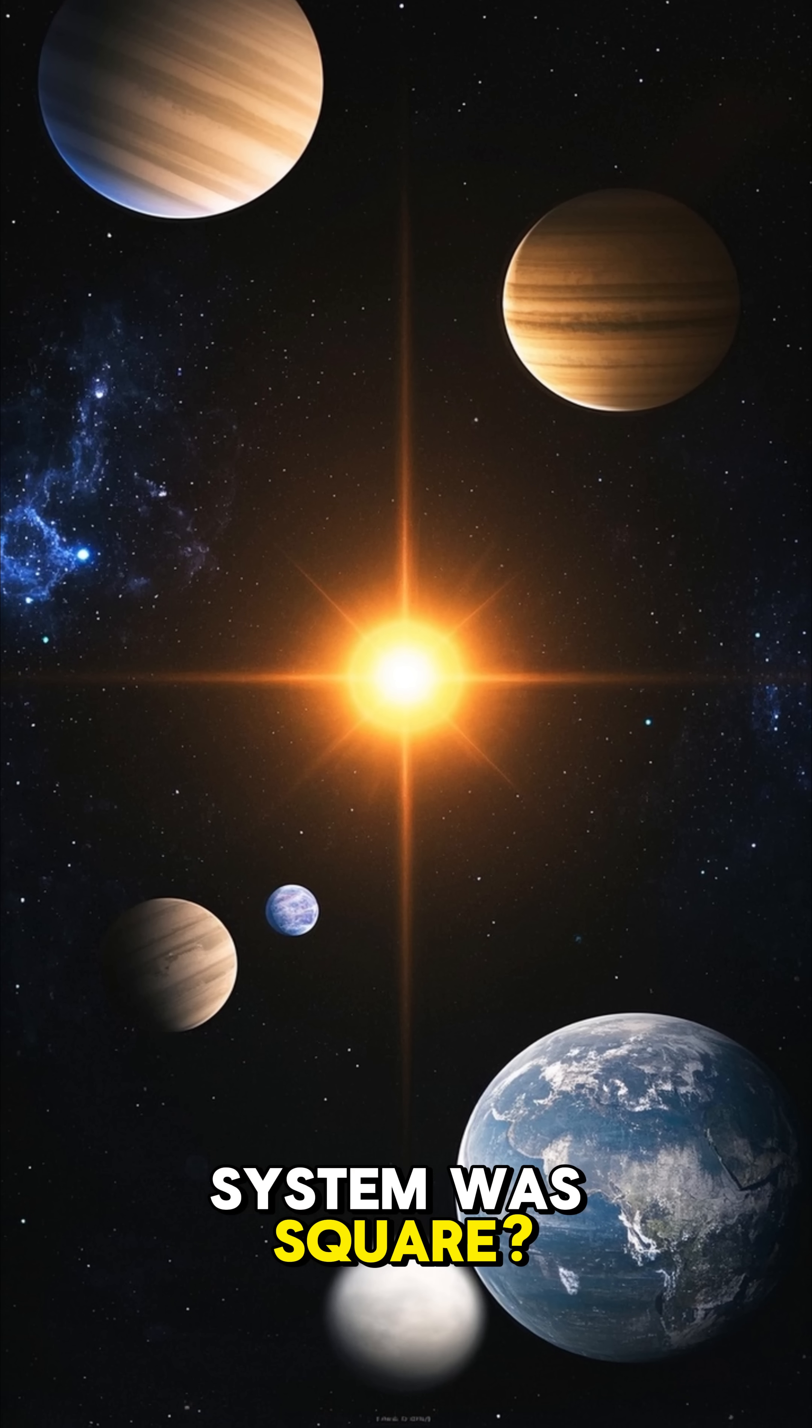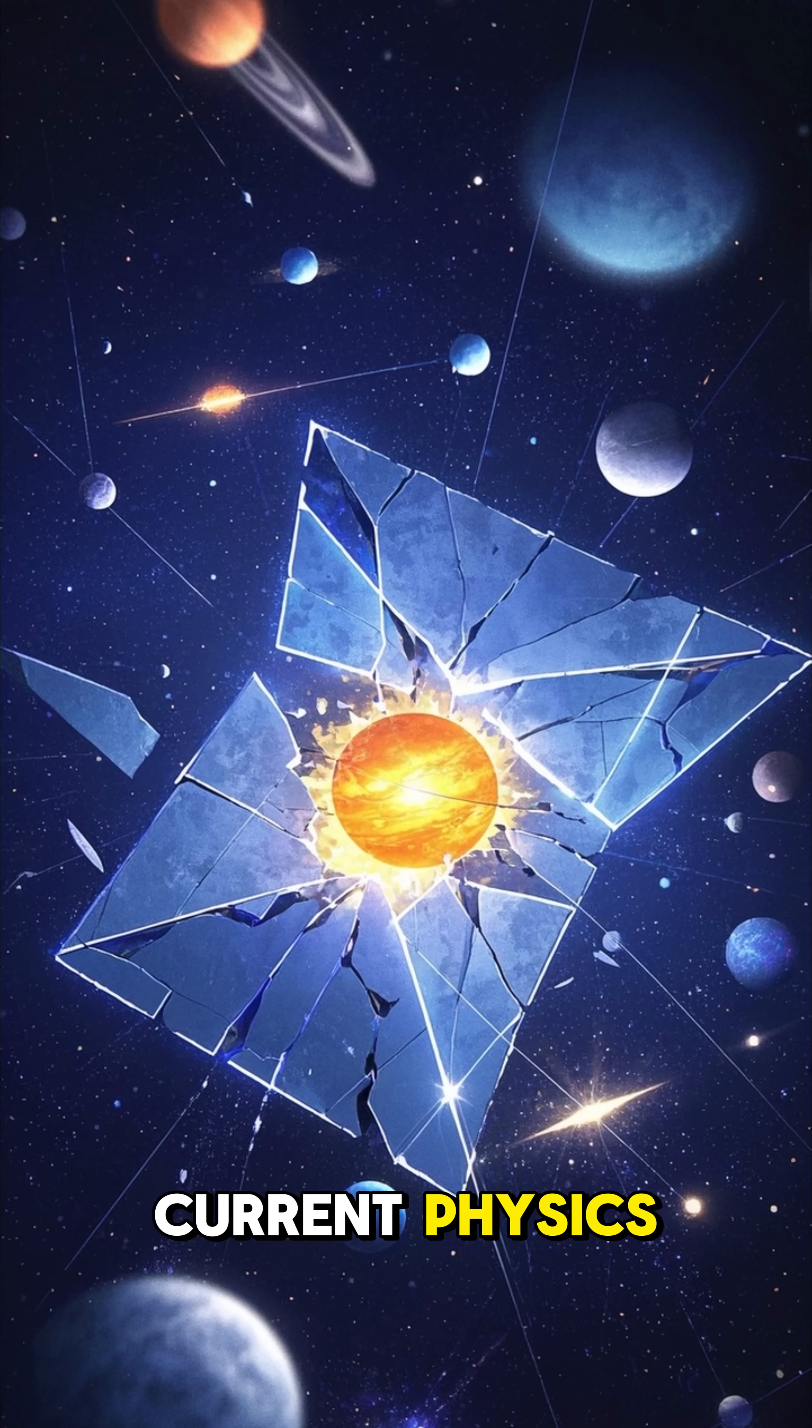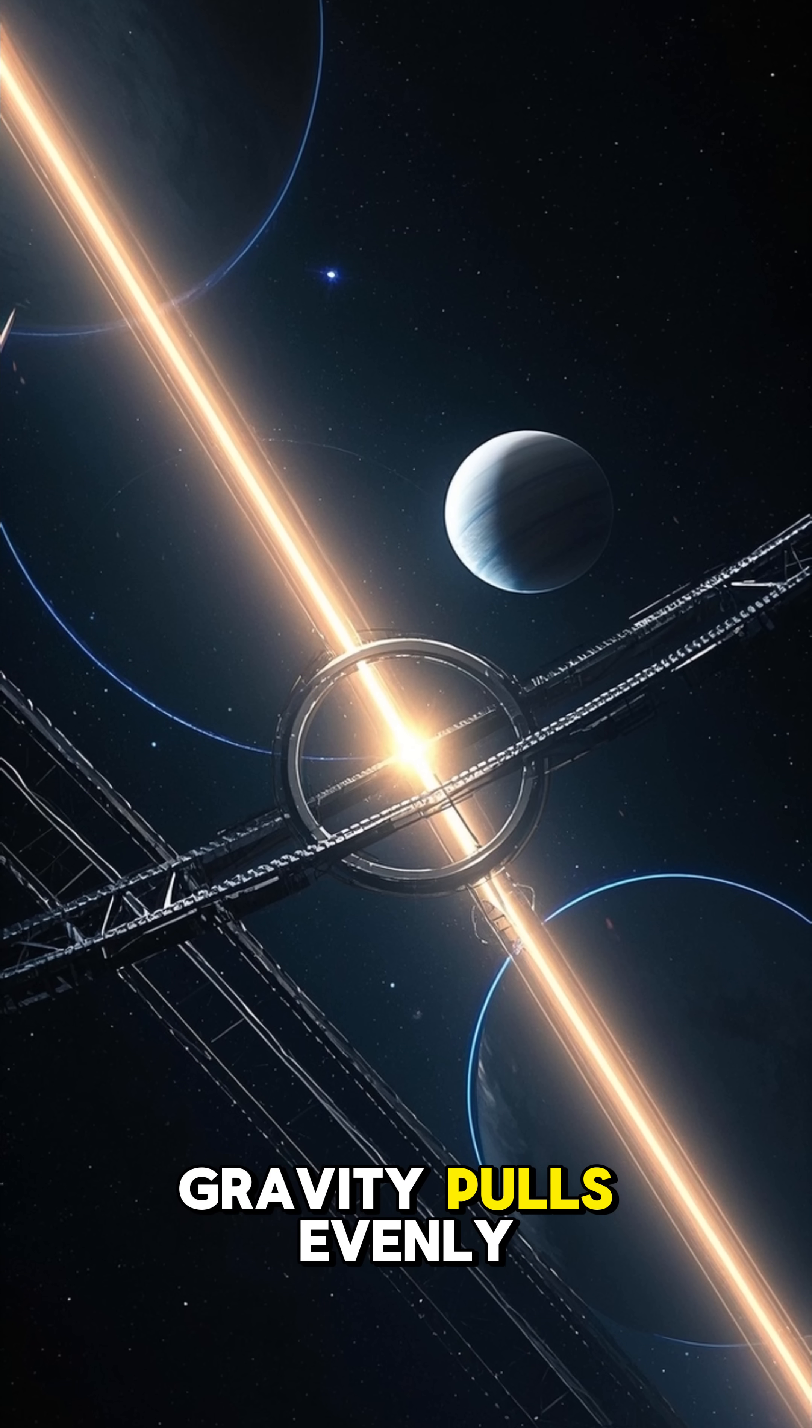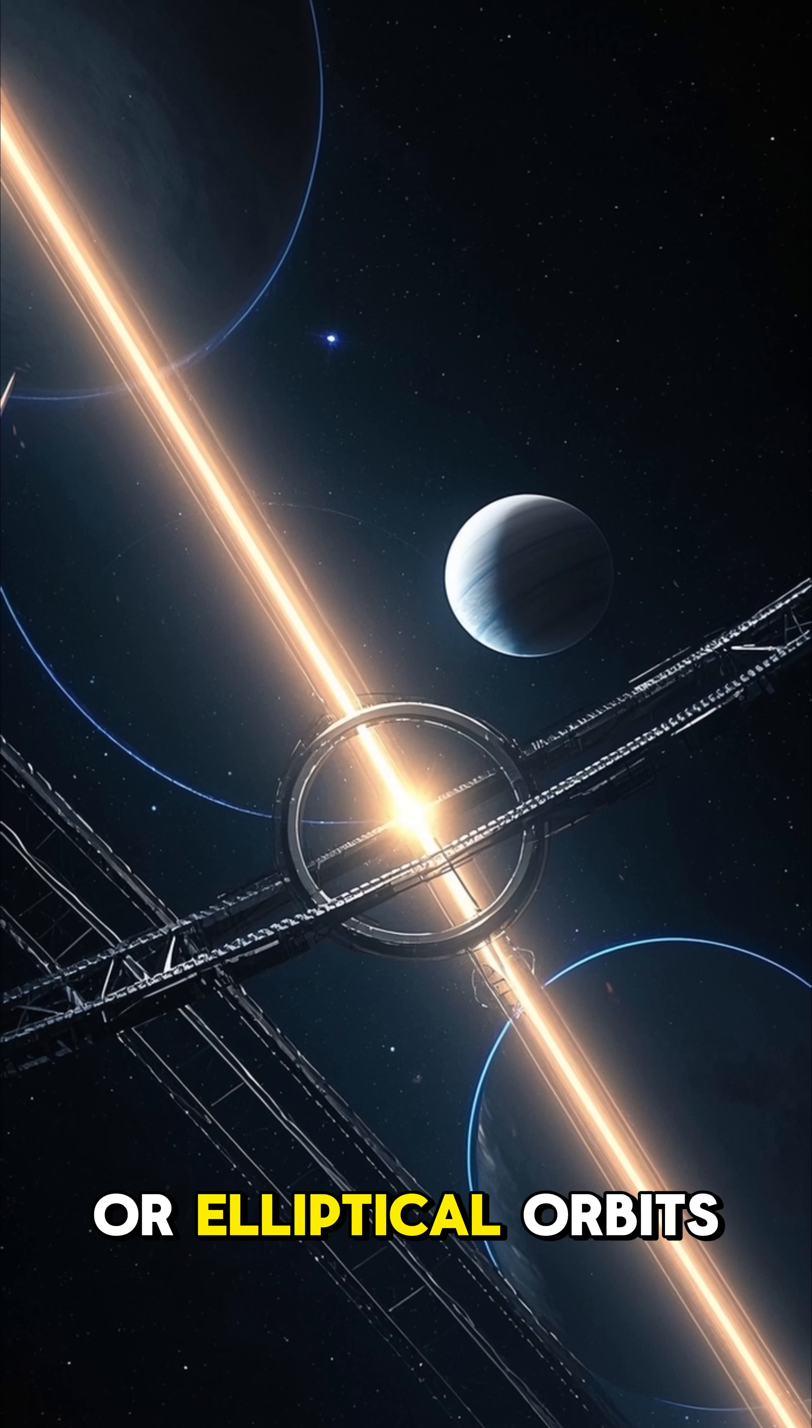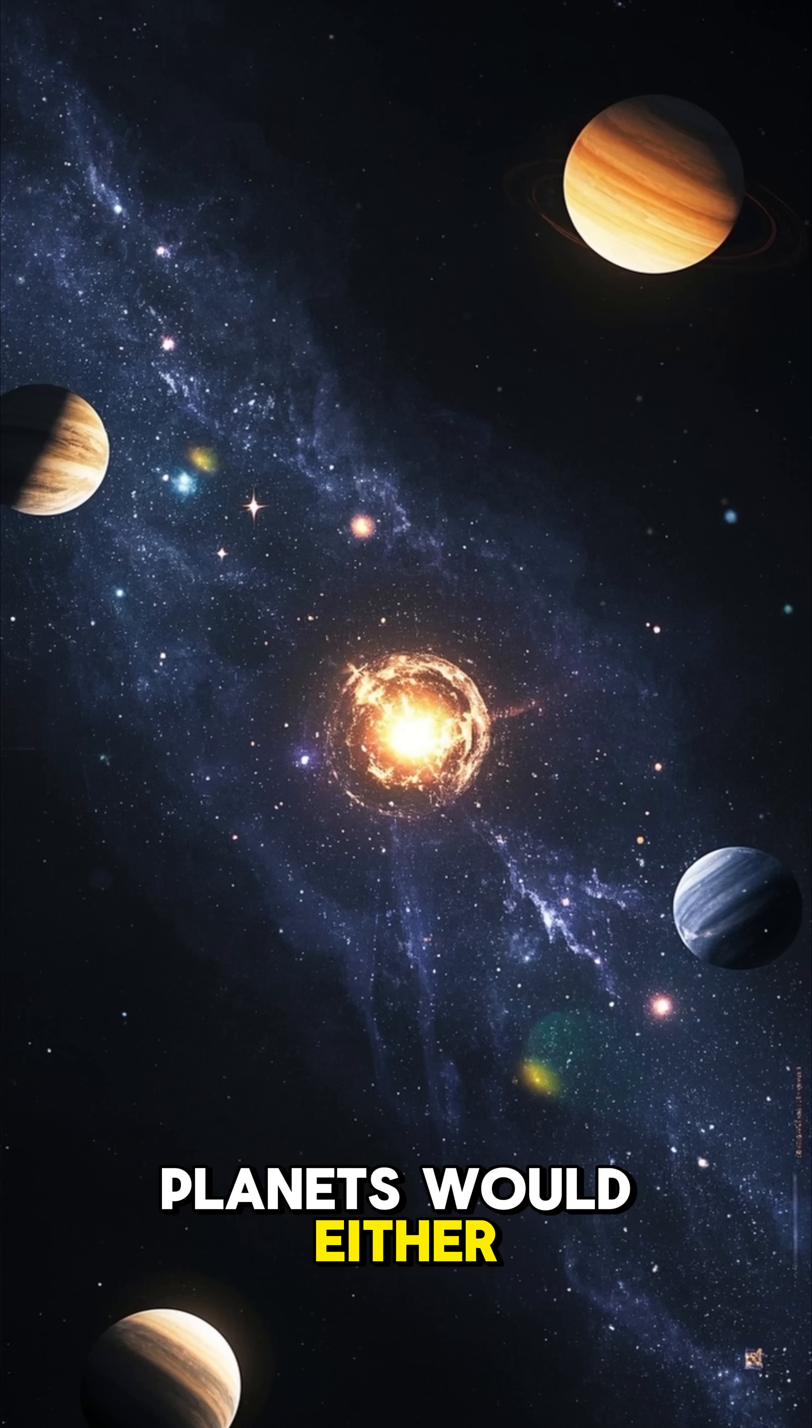What would happen if the solar system was square? Here are three possible scenarios. It would break current physics. A square solar system would defy the natural laws of gravity. Currently gravity pulls evenly in all directions, which is why planets have round or elliptical orbits. If the solar system was square, those orbits would be impossible. Planets would either